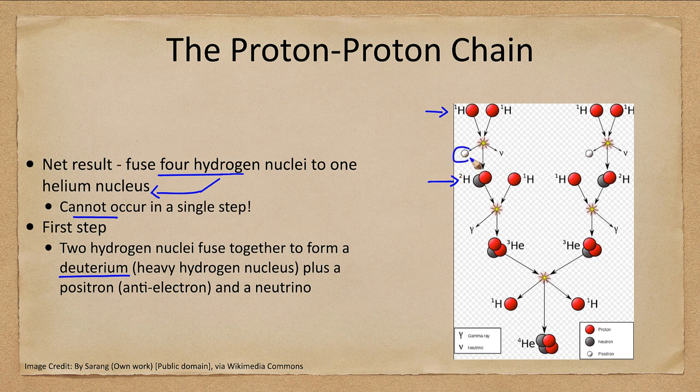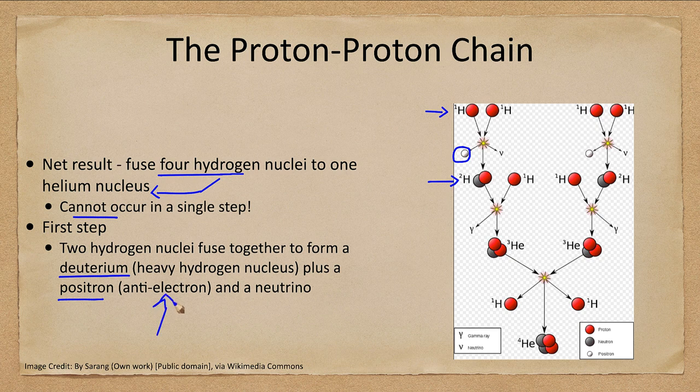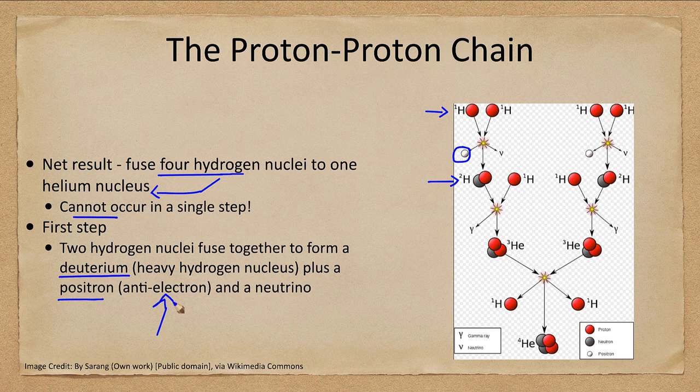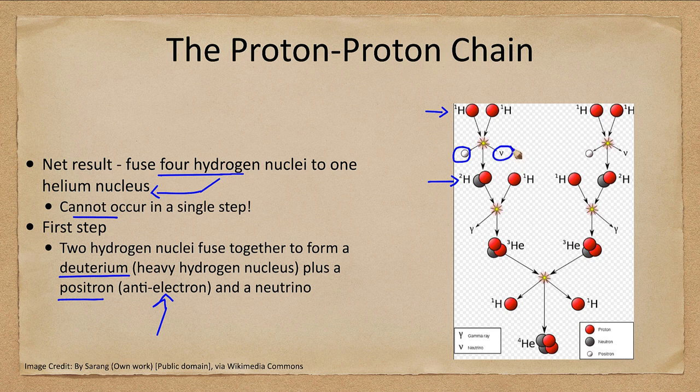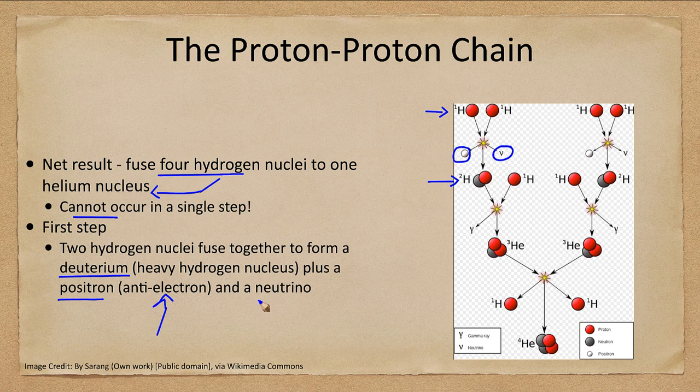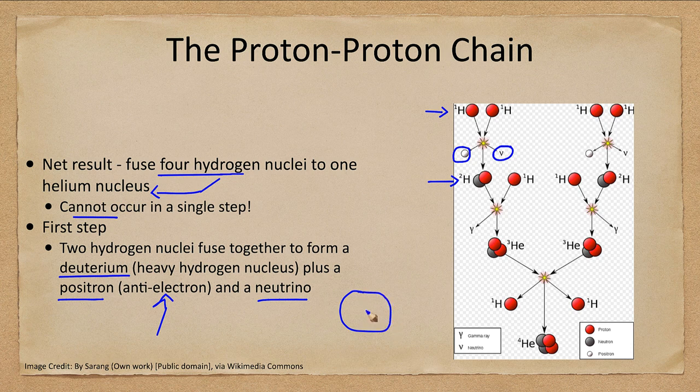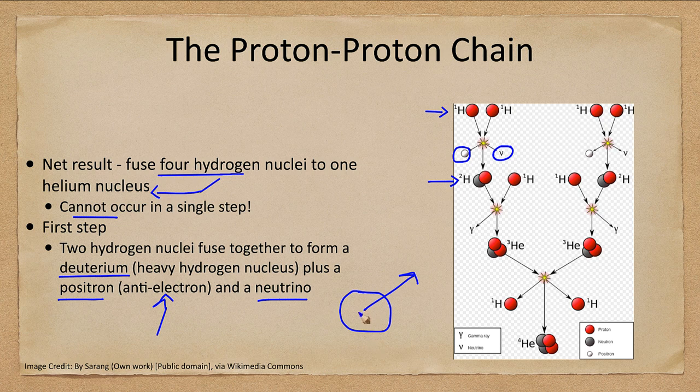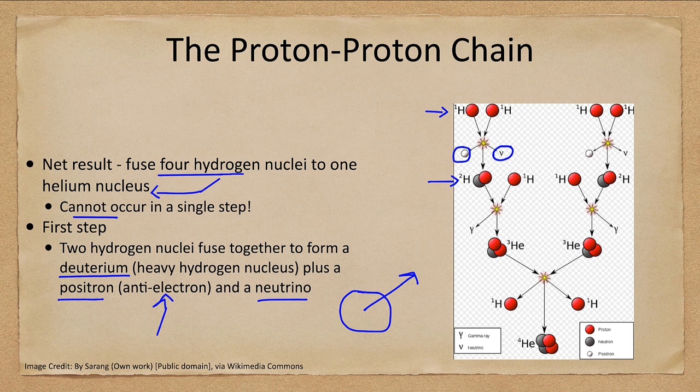In addition, a positron comes out. That's an anti-electron. What happens to an anti-electron in the middle of ordinary matter? It finds an electron and annihilates it producing energy. And then there is a neutrino. It's formed at the core and it just travels straight out and zips right out into space. It is not deterred by all that material in between. It travels right through that constantly.